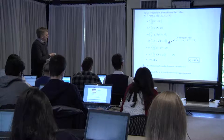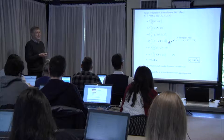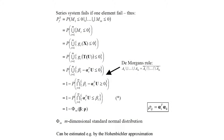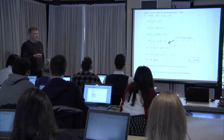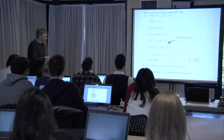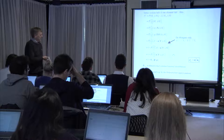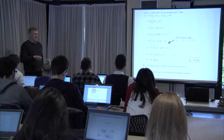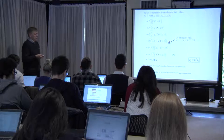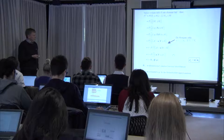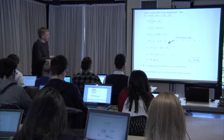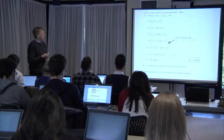The m-dimensional normal distribution function cannot be evaluated by hand or from standard tables. A good approximation called the Rackwitz-Fiessler approximation can calculate this quickly and accurately, and it is used in many computer programs for system reliability. In this way, the probability of failure for a series system can be obtained.